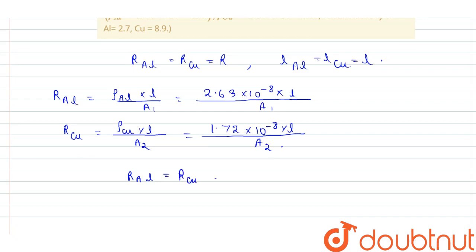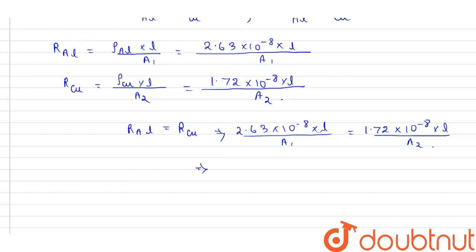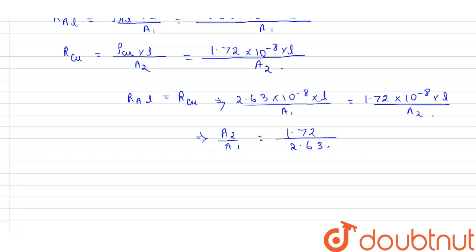From here we can write R_al = R_copper, therefore: 2.63 × 10⁻⁸ × L / A1 = 1.72 × 10⁻⁸ × L / A2. The 10⁻⁸ and L cancel out, giving us A2 / A1 = 1.72 / 2.63.